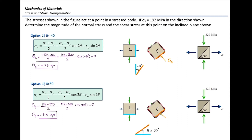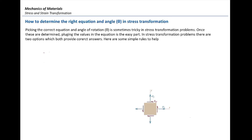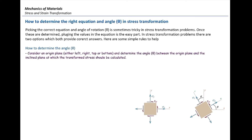So in order to solve these types of problems, we need to identify what is the beginning surface and how much we need to rotate that surface in order to get to that inclined plane. Now I'm going to give you the process of solving these types of problems. If we have one stress element and want to determine the stress on the rotated plane shown by theta, the first step is determining the angle of theta.